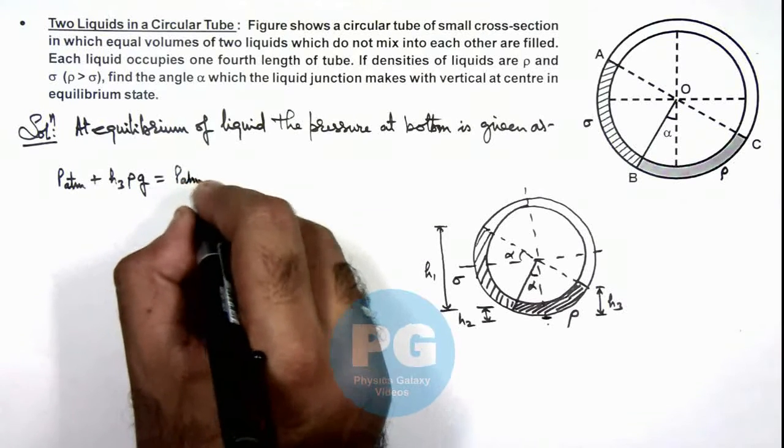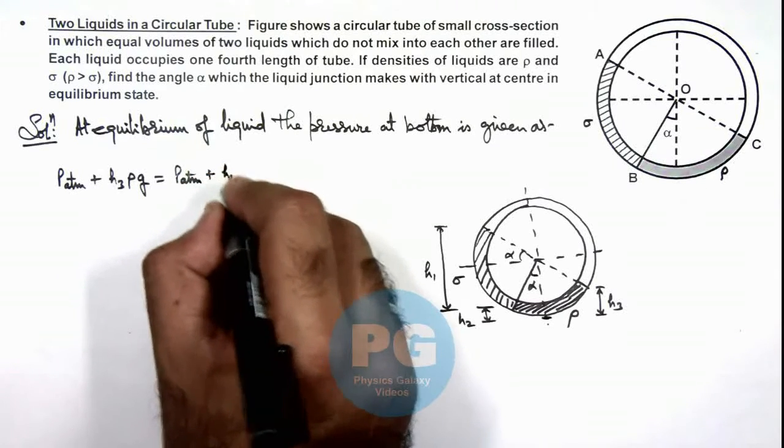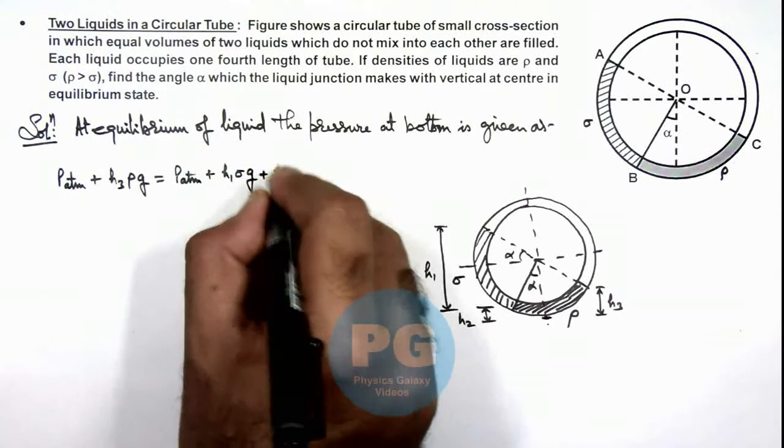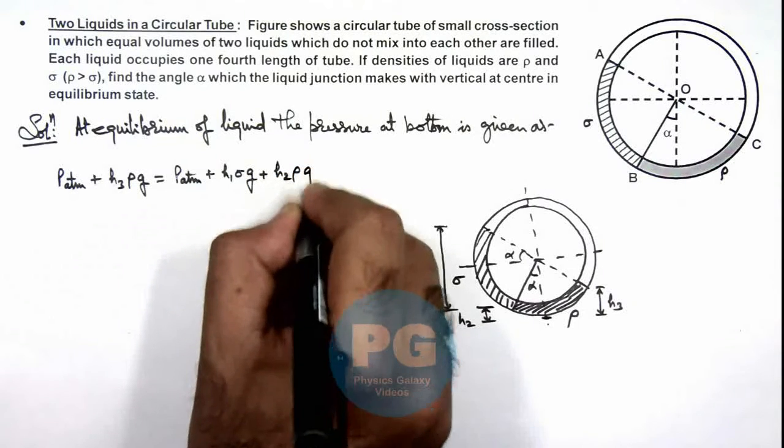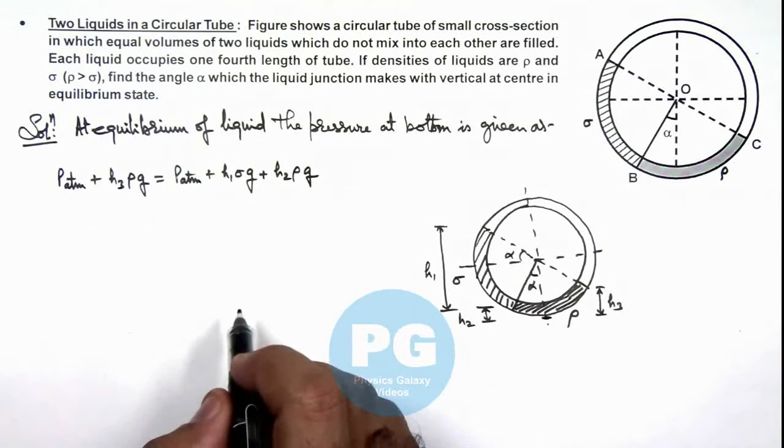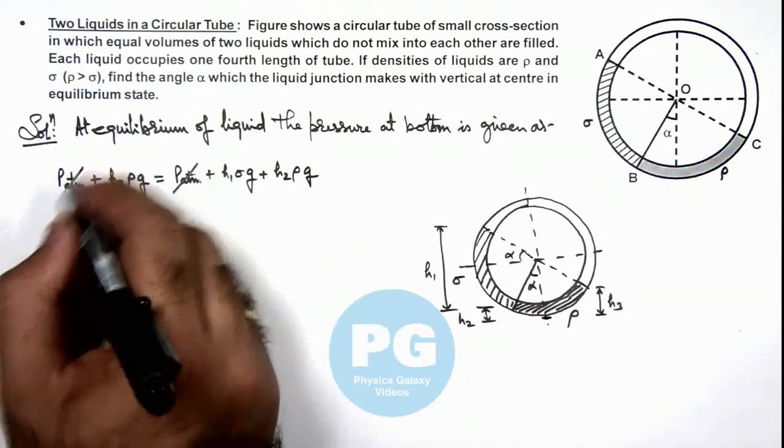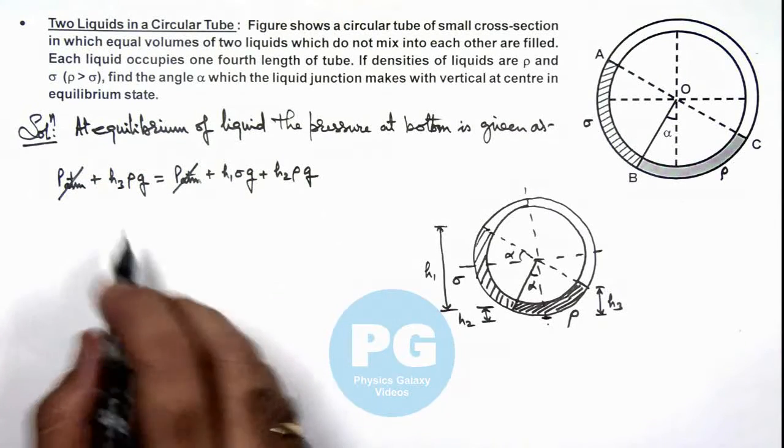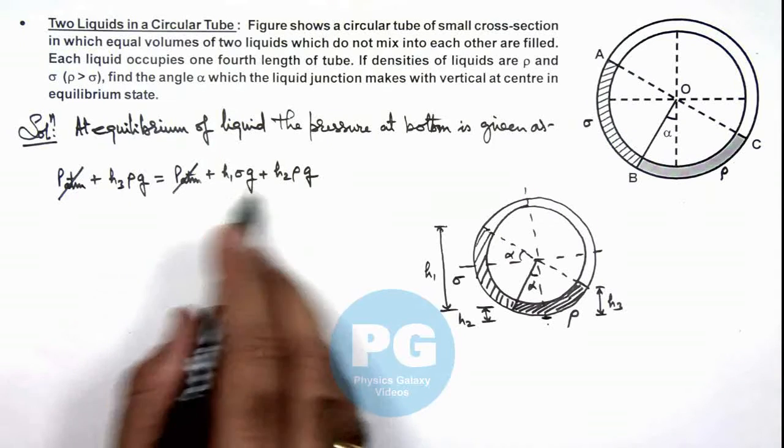It is P_atmospheric plus h₁σg plus h₂ρg, as this is another liquid and this is one liquid. In this situation, P_atmospheric gets cancelled out, and if we substitute the value of h₃, h₁, and h₂...